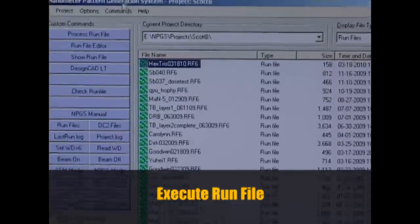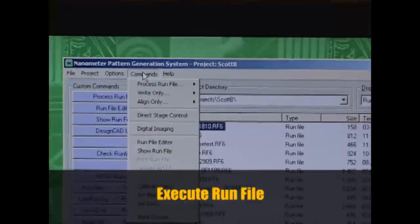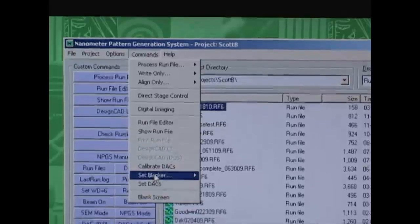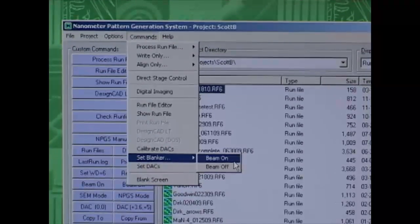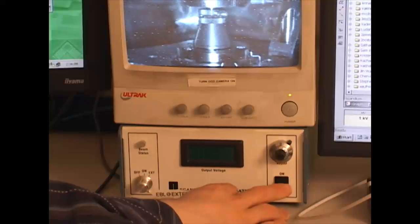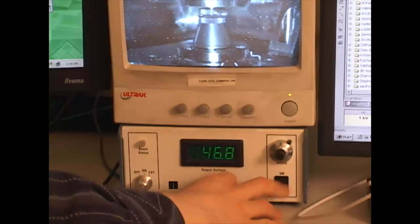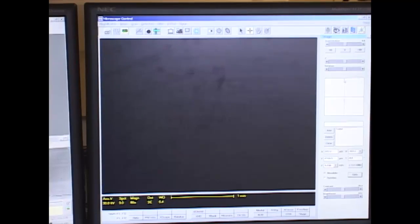Now to confirm that the NPGS computer is in control of the microscope, I go to the commands column, set blanker, beam on, and turn on my external beam blanker. I confirm that the image shows up on the other screen.